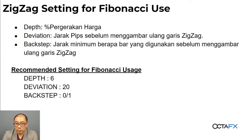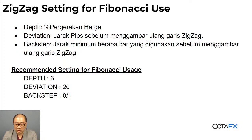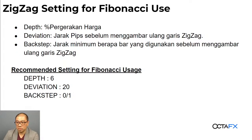Depth itu adalah persentase pergerakan harga yang berlawanan. Deviation adalah jarak perubahan pip sebelum dia menggambar ulang garis zigzag tersebut. Back step itu adalah jarak minimum berapa bar yang digunakan sebelum menggambar ulang zigzag. Rekomendasi saya untuk settingan zigzag adalah 6 untuk depth — berarti kita melihatkan 6% reversal di market. Setiap swing atau pergerakan harga yang bergerak lebih dari 6% itu akan terdeteksi, baru dia akan gambar. Di bawah 6% tidak ada gambar.